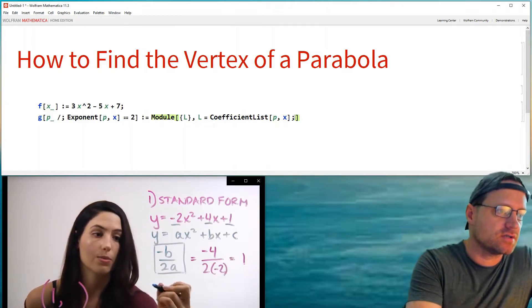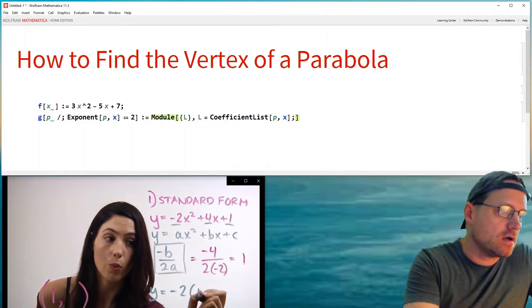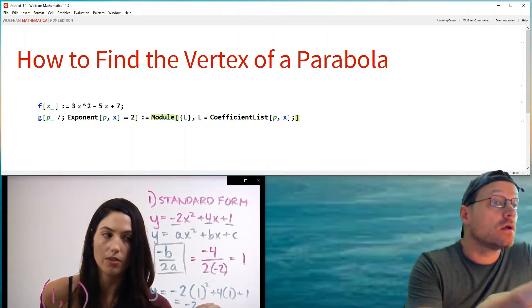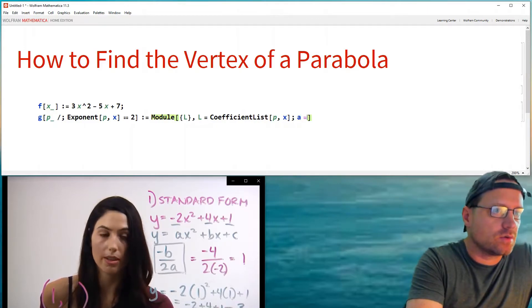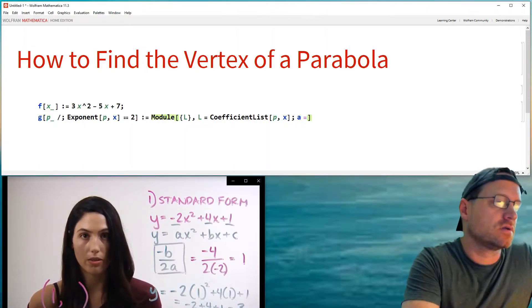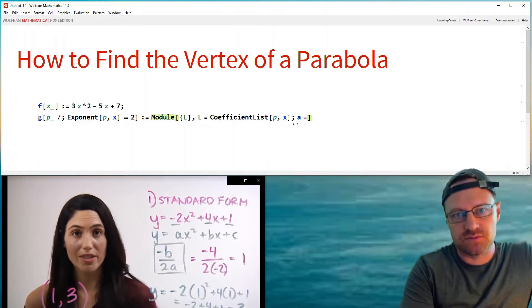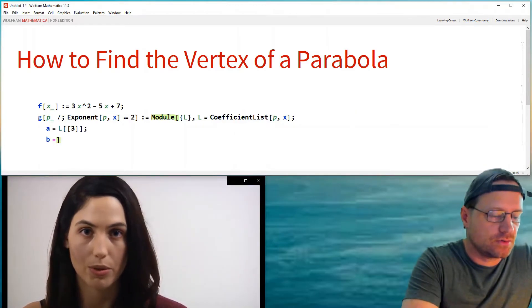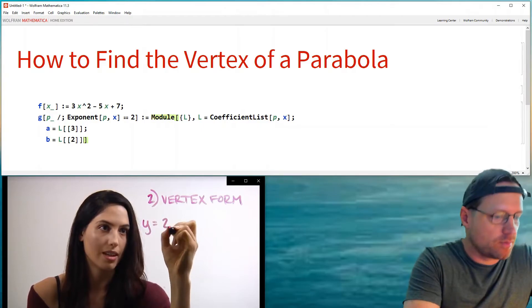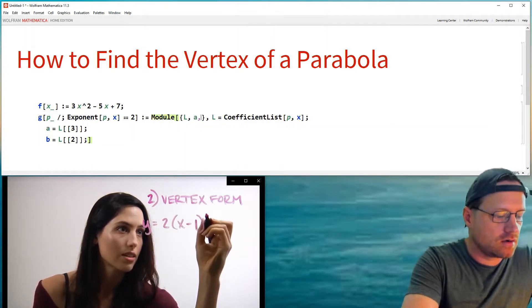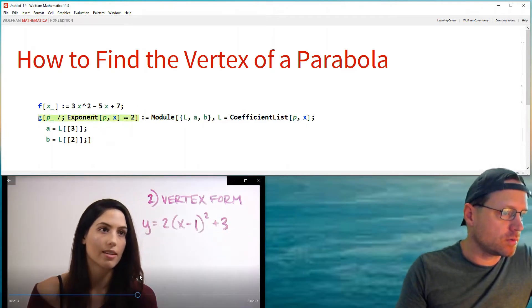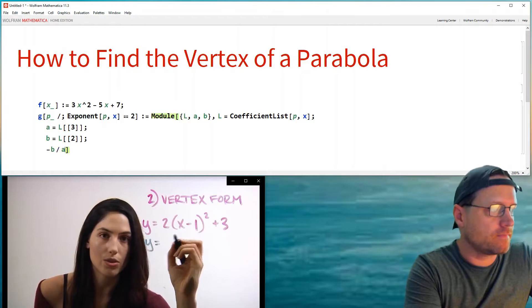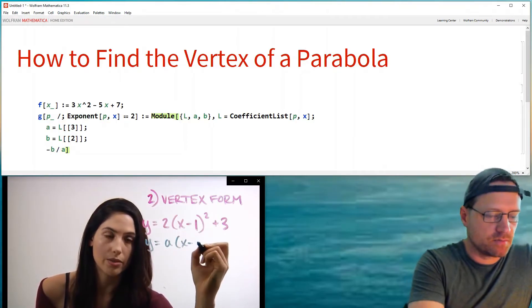Let's call that l. So l will be equal to coefficient list of p with respect to x. And then what I want to do is use this formula that Nancy has here minus b over 2a. So also I should incorporate the values of a and b here. So a will be equal to the third one because remember coefficient list writes this backwards. So this will be l3 and then b will be equal to l2 and then I need to go and put these up here a comma b.